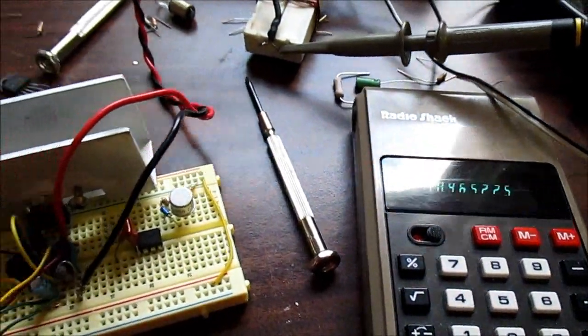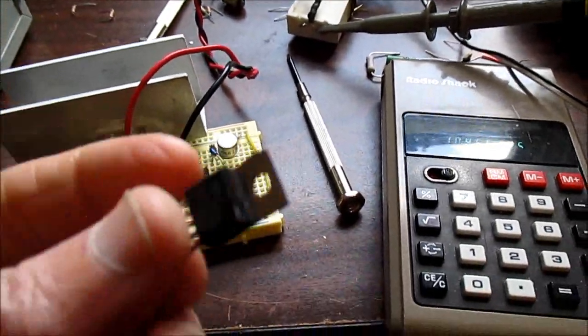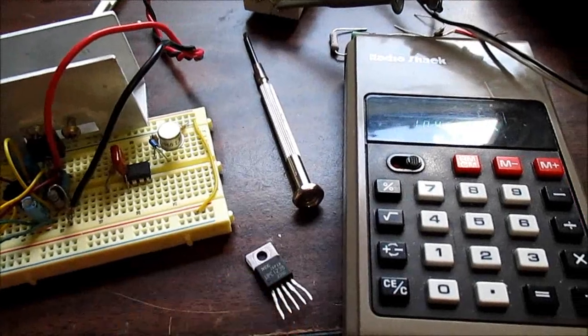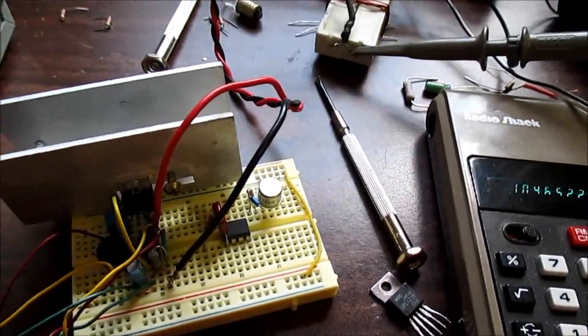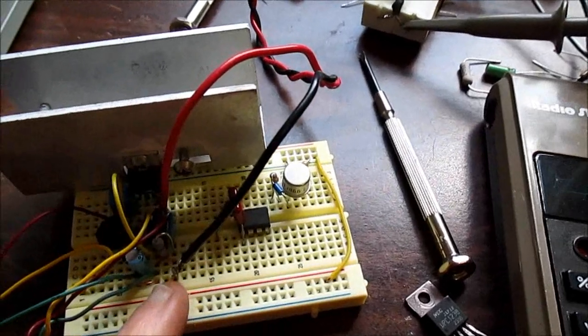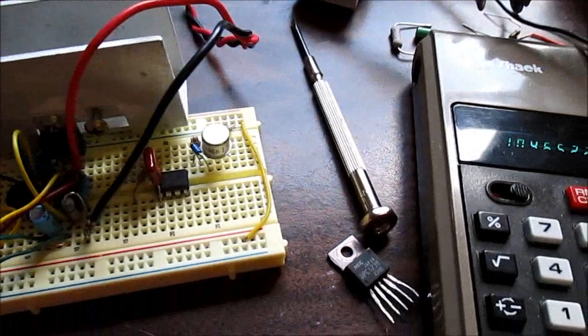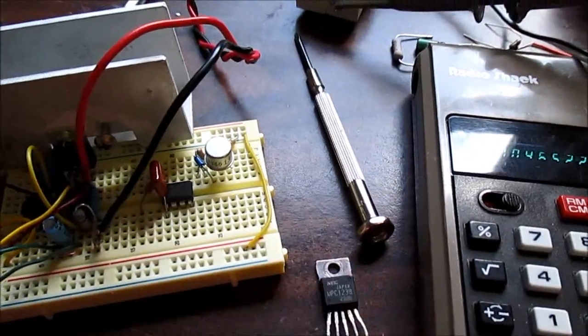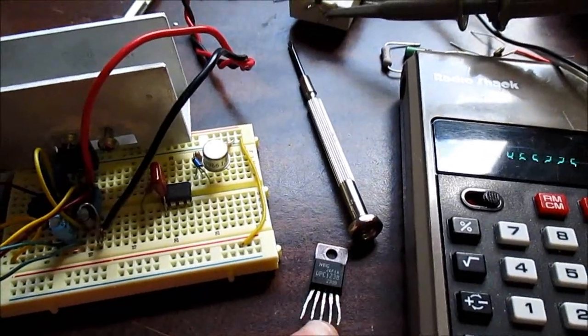So, for some reason this amp with 4 ohm loads just doesn't quite match up. Not getting the output power I think it should. It could be something with this board, but putting the other chip in there and checking it out, this is just not holding up under 4 ohm loads as well.